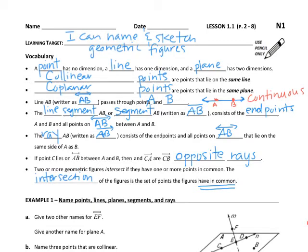Geometry is a course where we are going to need to understand a lot of new vocabulary, and we are going to be speaking almost a whole new language in this class. So understanding what a point is is very important, as well as a line, as well as a plane, as well as co-linear points.